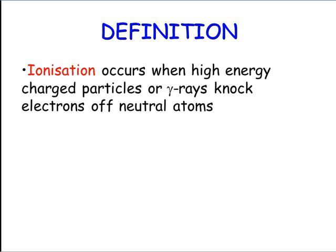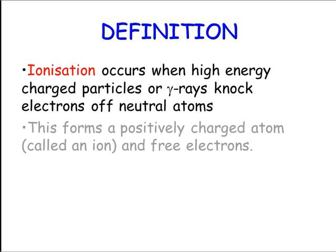To begin with, I want to have a quick look at a definition — something that we've talked about in Year 9 and 10 Science, but I want to relate it to the context of radiation. This definition is for ionisation, and this occurs when you've got high energy charged particles such as alpha rays or beta rays or gamma rays and they're going to knock electrons off a neutral atom. The result is that we get a positively charged atom — that's what we call an ion, hence the name ionisation — and we get free electrons, the electrons that get knocked off are there on their own.